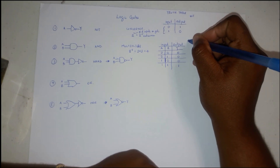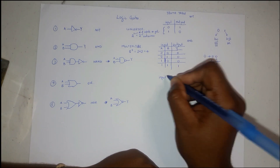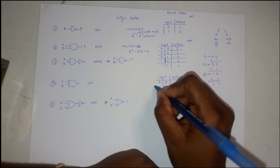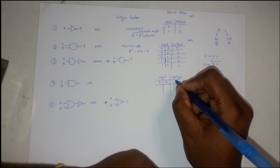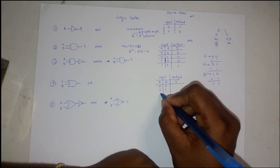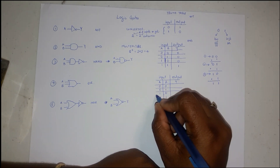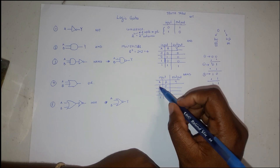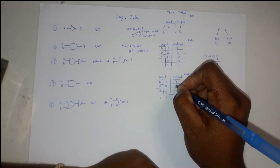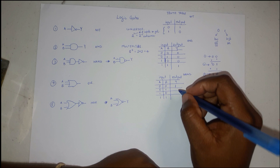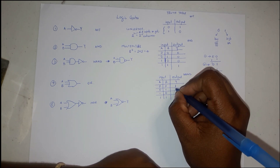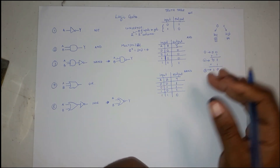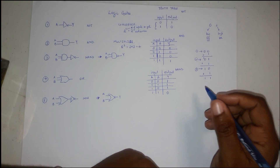For the NAND gate, the truth table is the opposite of the AND. The inputs A and B produce the same set of outcomes. Since NAND is NOT-AND, the outputs are simply inverted: where AND gives 0, NAND gives 1, and where AND gives 1, NAND gives 0. So the NAND output column is 1, 1, 1, 0.